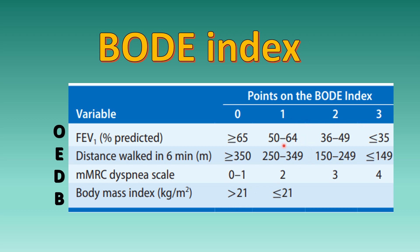For FEV1: scores 1, 2, and 3 are given in differences of 15 — specifically 50 to 64%, 36 to 49%, and less than 35% respectively. For distance walked in 6 minutes: 250 to 349 meters is 1, 150 to 249 is 2, and less than 149 is 3 — a difference of 100 meters each step.